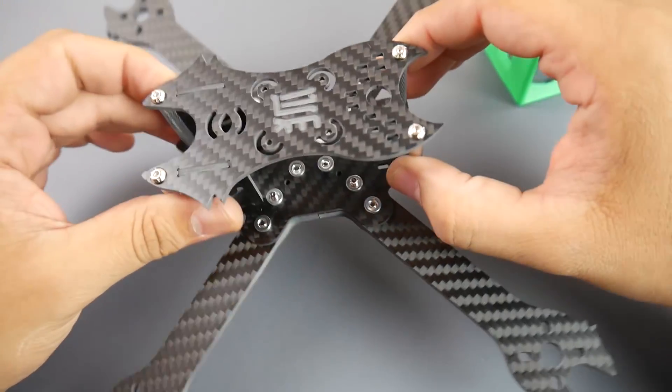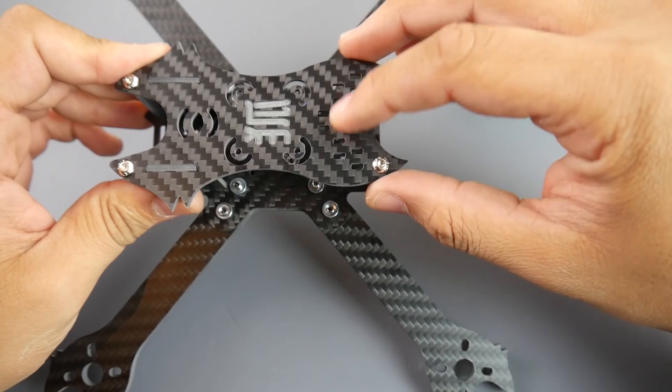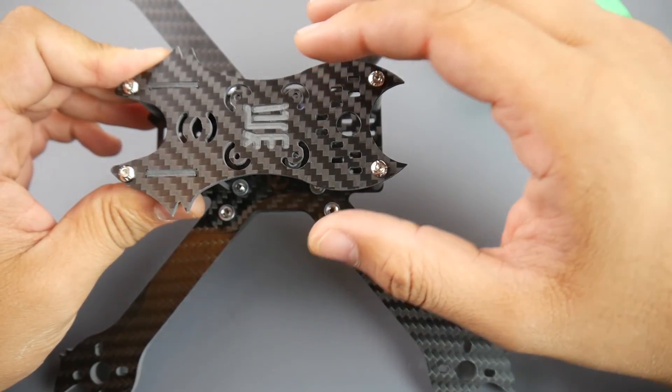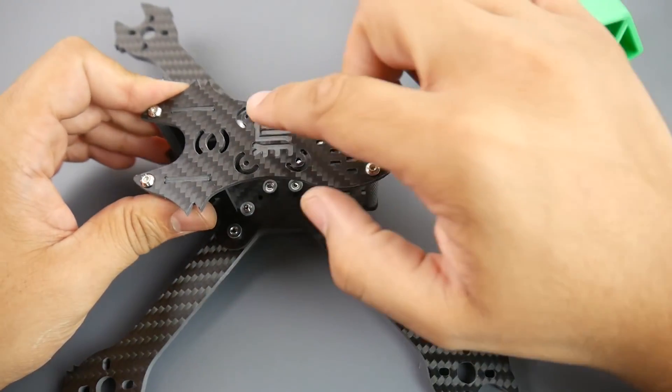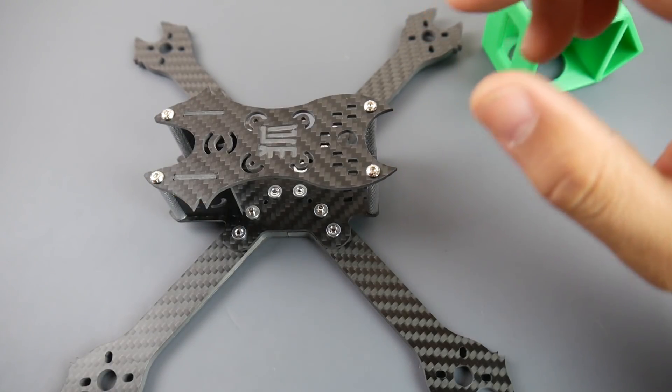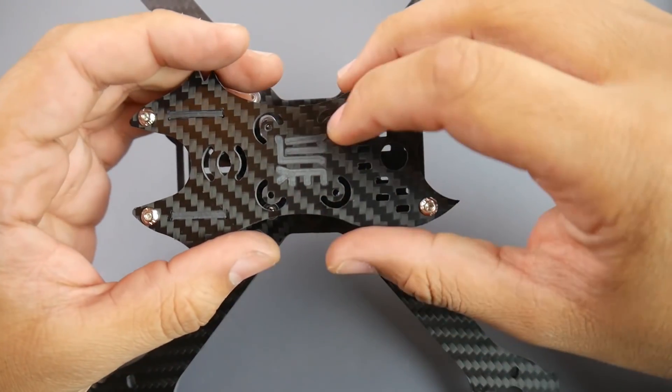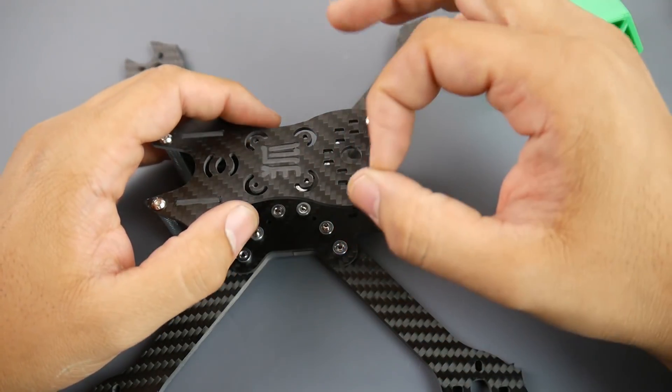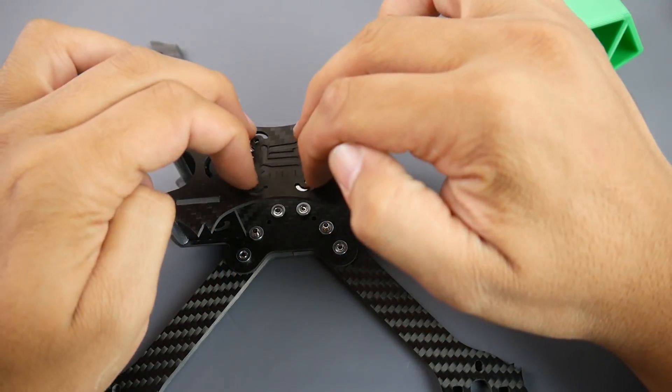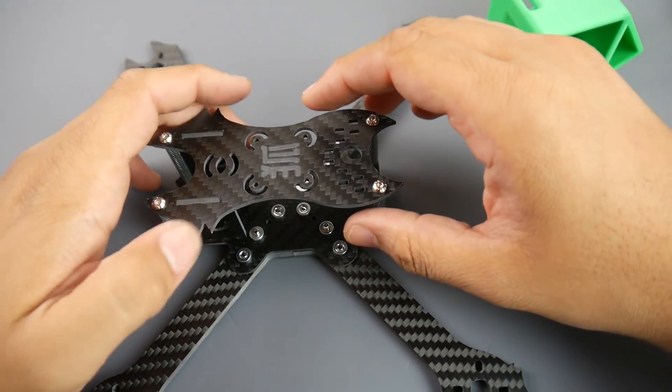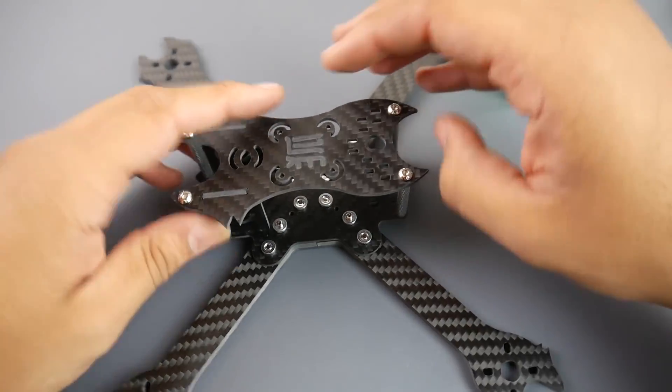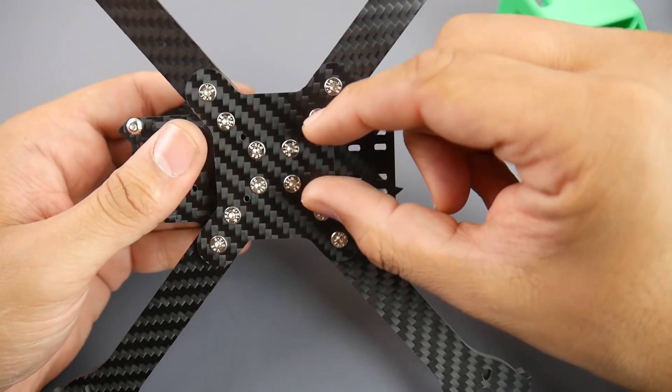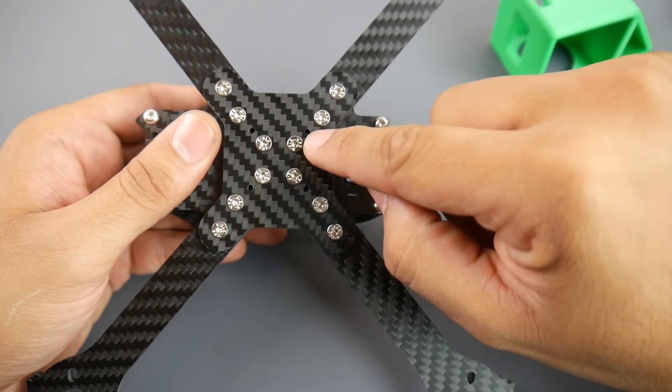As you can tell, we do have a hole for the SMA mounting which is really nice, and it does have these. I think these are actually 20 by 20 up here. Okay, so this is really nice. These are M2 size 20 by 20 hole stacks, so maybe if you had a very small 20 by 20 VTX of some sort you can mount it up here with some nylon standoffs and screws, which is really nice.